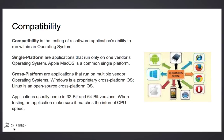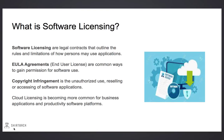A common open-source cross-platform operating system is Linux. Applications will usually come in 32-bit and 64-bit versions. When we test an application, we must make sure that it matches the internal CPU speed. Software licensing are the legal contracts that outline the rules and limitations of how people may use an application. End-user license agreements are abbreviated as EULA.